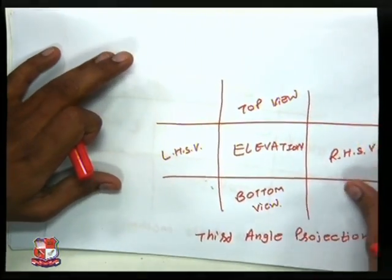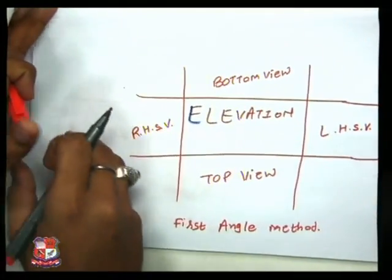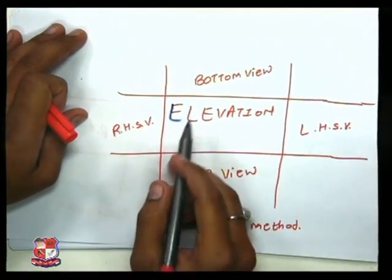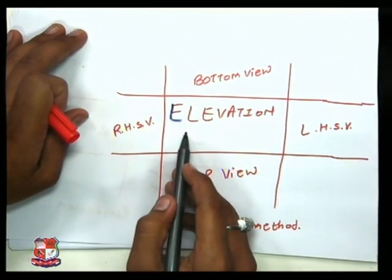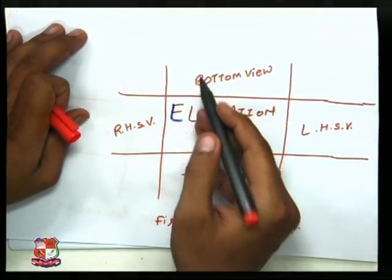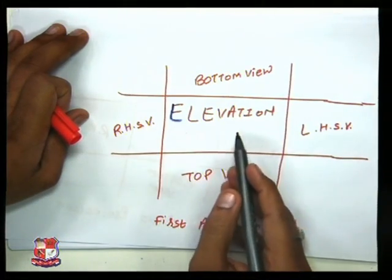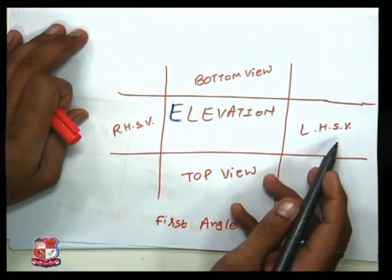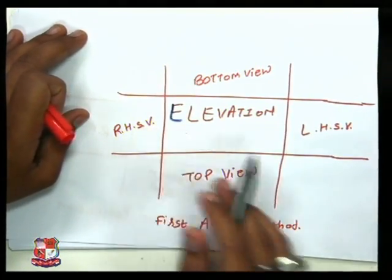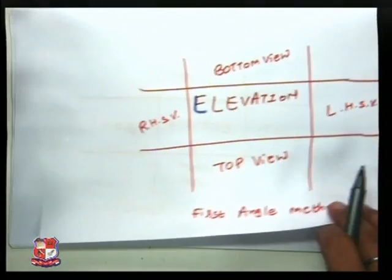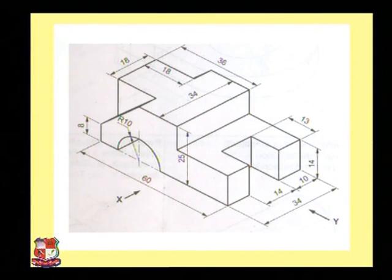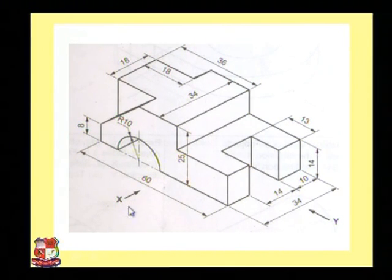In the first angle projection method it would be totally opposite. Elevation would be in the center, but bottom view will come on the top, top view will come on the bottom, left hand side will come on the right hand side, and right hand side will come on the left hand side. Now we will see how we can draw the projections of the given figure. We have been given a figure from which we need to draw the projections, with an X mark indicating the front view direction.